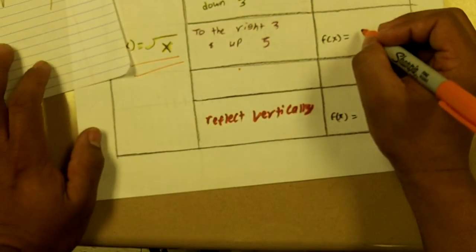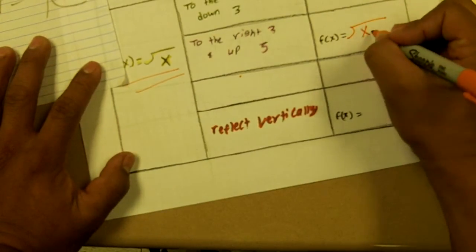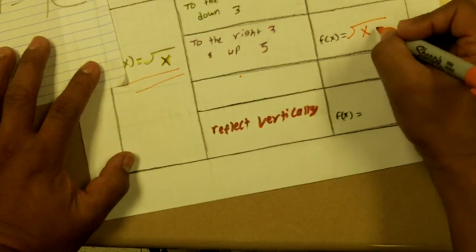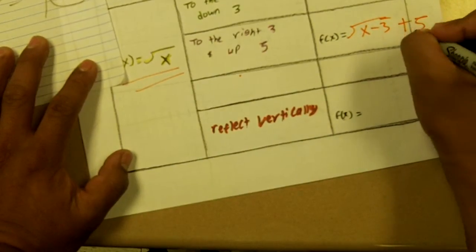And then for this one here it's going to say to the right three, no, five. So you subtract three and add five.